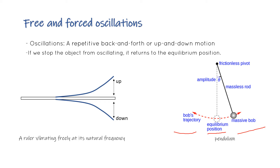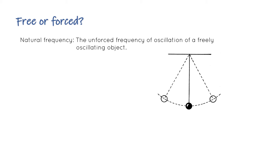There are two types: free oscillation and forced oscillation. A pendulum is an example of free oscillation - it moves freely. The ruler being pressed is an example of forced oscillation. In oscillation, there are two types of frequency: natural frequency and forced frequency.